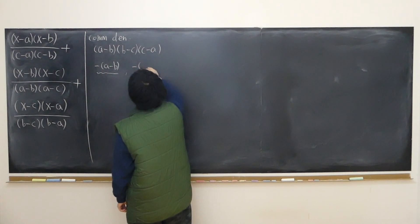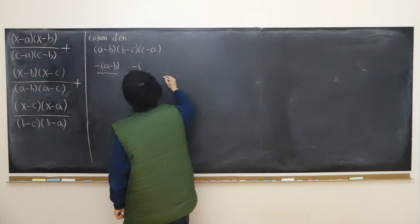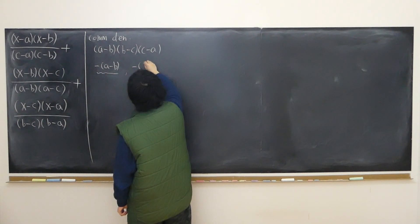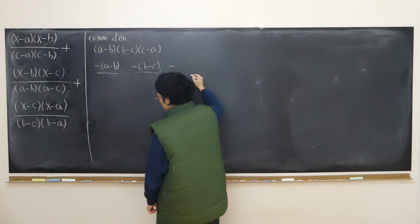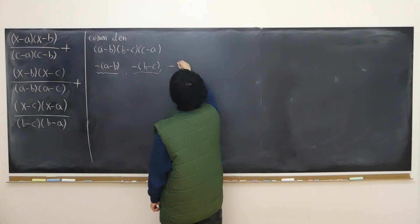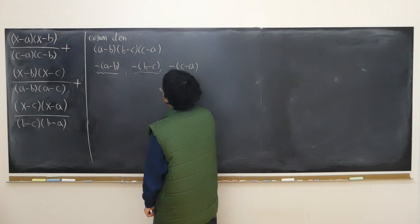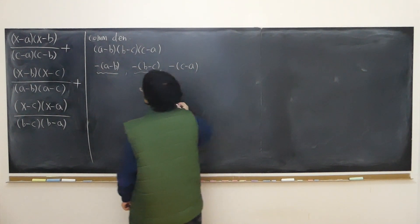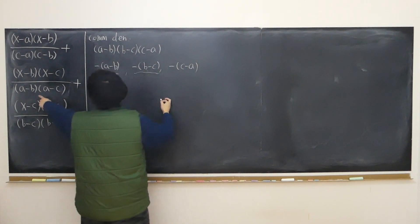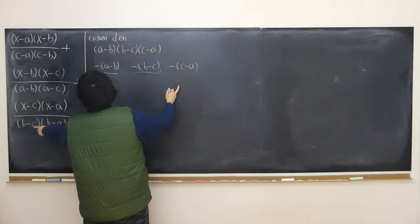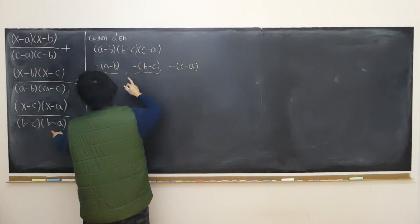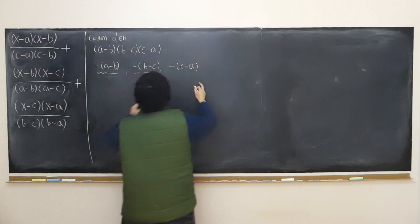Then I have to multiply the second term likewise — multiply by negative of (b minus c). And to the third term, I have to multiply by negative of (c minus a). I can quickly check: (a minus b), (a minus c), (c minus a) — negative of (b minus c), (b minus c), (b minus a) — negative. There's no problem.